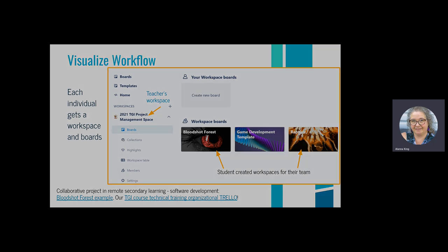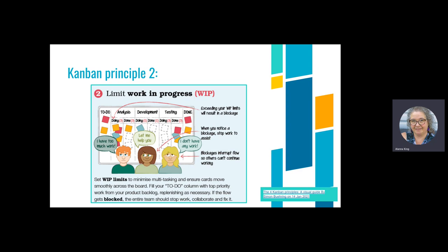That leads to Kanban principle number two: limiting work in progress, also known as WIP. Anytime you exceed what you're actually capable of, you result in a blockage. When your group notices a blockage — work not progressing at the pace you set — everybody can stop and jump in to assist. Any blockage interrupts the flow; others can't continue working. With Kanban you can visually see when blockages are happening.